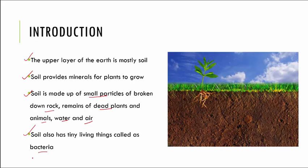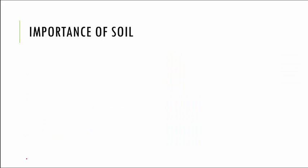Now we know that soil is very important for us. Let us see how exactly we depend on soil. If you talk about the importance of soil, first let's talk about how soil is important to plants. Soil provides nutrition to plants, and this nutrition is going to help the plant grow and make food. In turn, we are depending on the food that the plant is making.